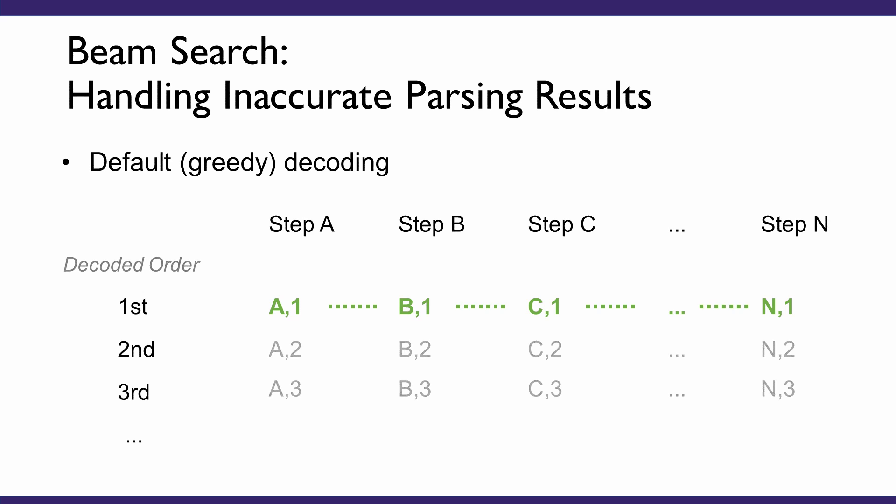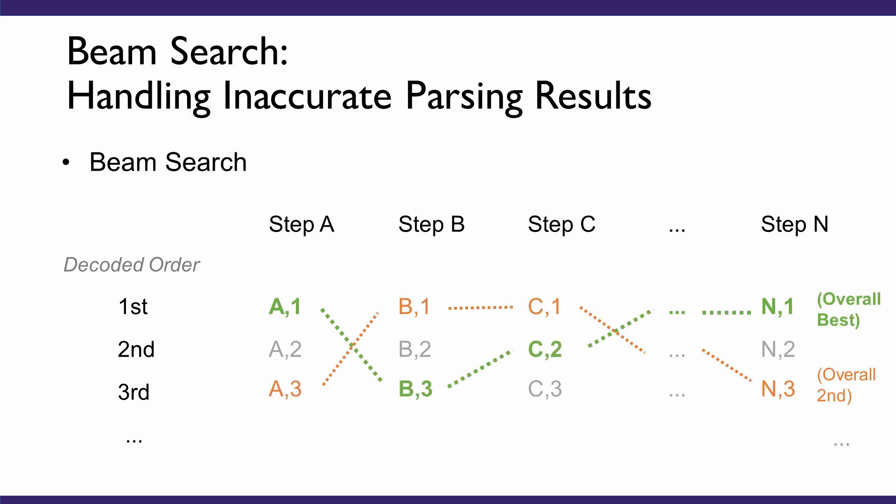However, such greedy decoding may generate a suboptimal sequence if there are errors in the decoded actions, because for each step it only selects the best action depending on previous actions, which can be a local optima considering the full sequence. To address this issue, we use BeamSearch to track the top three decoded sequences at each step to improve the overall parsing result. Each beam is a parsable action sequence. In generating these sequences, the model aims to maximize the probability of the overall action sequence rather than the probability of individual actions.